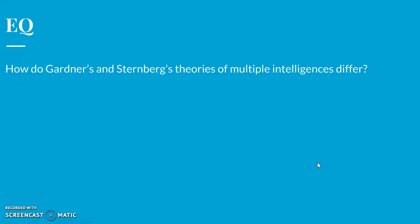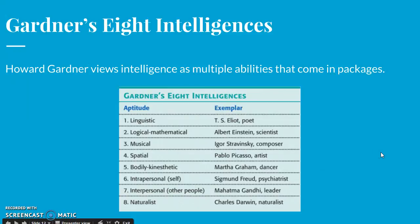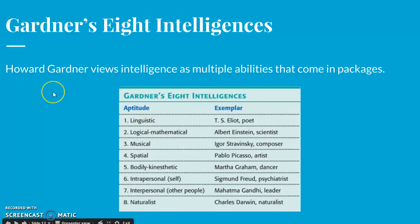Next essential question: how do Gardner's and Sternberg's theories of multiple intelligences differ? Howard Gardner viewed intelligence as multiple abilities that come in packages. He had a theory of eight intelligences, and on the chart you can see the aptitudes and examples of people who were exemplars. Gardner argues we do not have an intelligence, but rather multiple intelligences, including verbal and mathematical aptitudes assessed by standard tests.